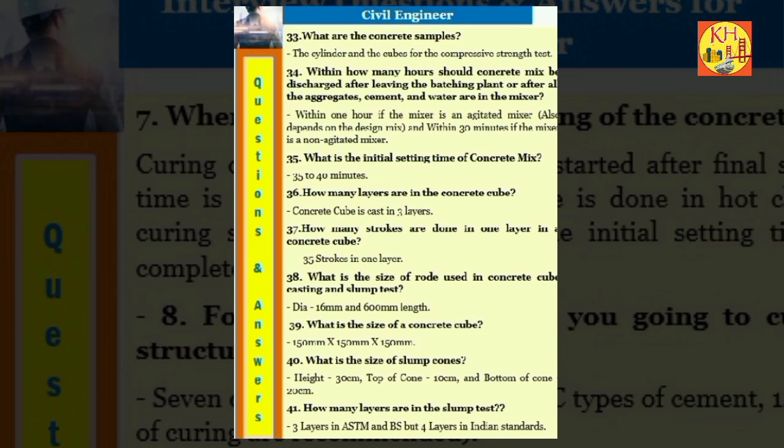Question 34: Within how many hours should concrete mix be discharged after leaving the batching plant or after all the aggregates, cement, and water are in the mixer? Within one hour if the mixer is an agitated mixer, also depends on the design mix, and within 30 minutes if the mixer is a non-agitated mixer. Question 35: What is the initial setting time of concrete mix? 35 to 40 minutes. Question 36: How many layers are in the concrete cube? Concrete cube is cast in three layers.